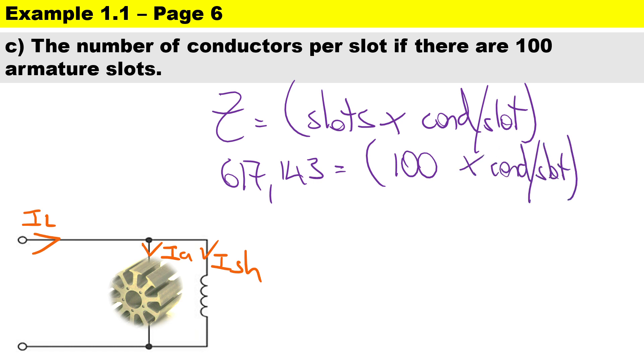And they say there are 100 slots. So now to calculate the number of conductors per slot, just a little bit of mathematics: 617.143 divided by 100, that gives us 6.17. Now you can't have a tiny little piece of conductor, so we round it off. We normally round it up, so it's going to be 7 conductors per slot.